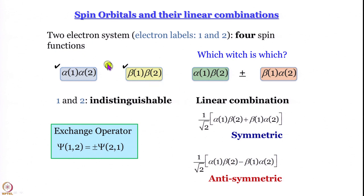Before going there, what we have learned so far is about spin orbitals. Let me define a spin orbital: a spin orbital is a one-electron wave function incorporating the spin part. It is as simple as that. An orbital is — for the nth time — a one-electron wave function. A spin orbital, in addition to having the spatial coordinates for this one-electron wave function, also has the spin part.